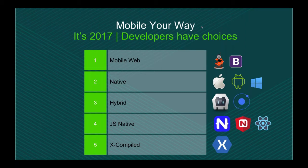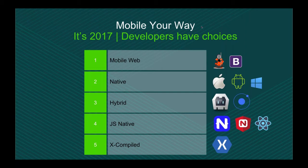When picking a technology, it really depends on where your expertise lies in-house. If you have a lot of expertise in Angular, it doesn't make much sense to go with Xamarin and C#. But if you have a .NET shop, Xamarin is what you want to look at. The technology stack you pick depends on the app you're trying to build, your audience, your expertise levels, and the code base you want to maintain going forward.